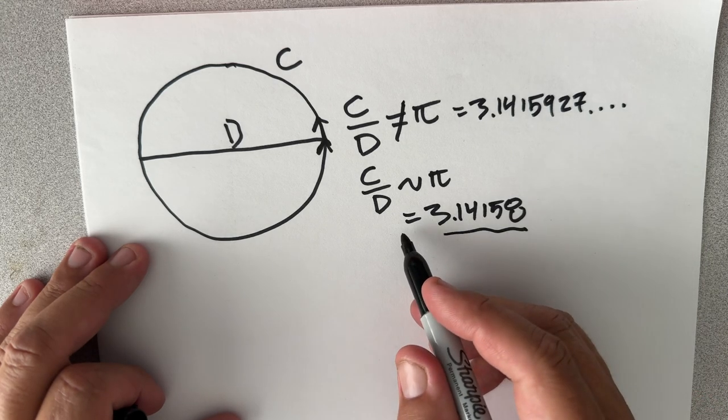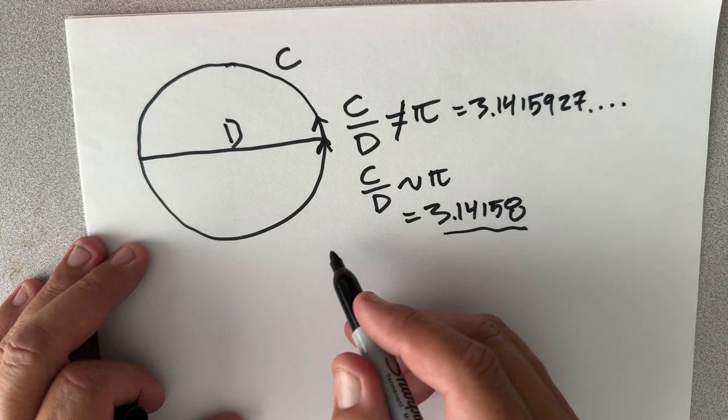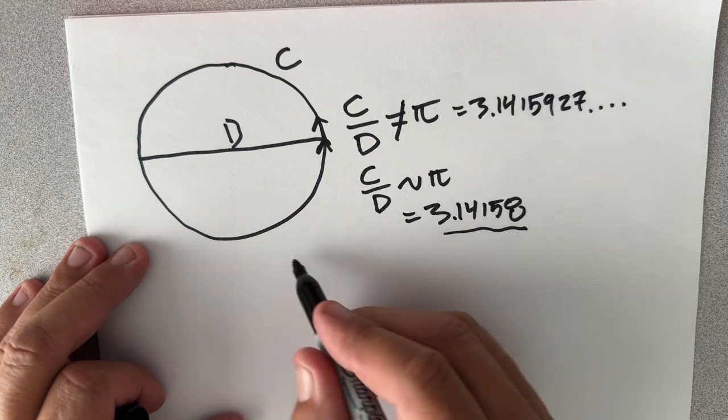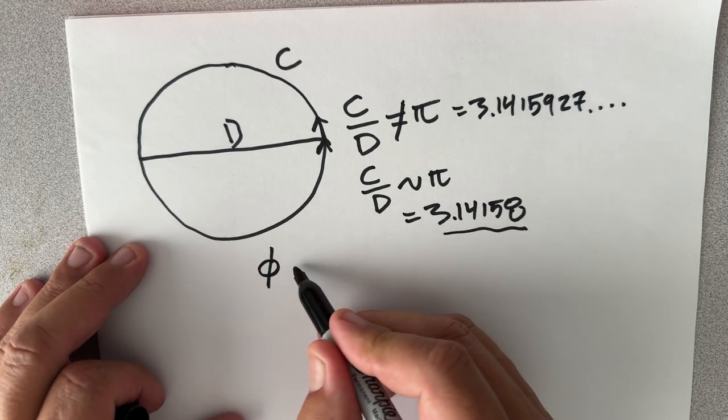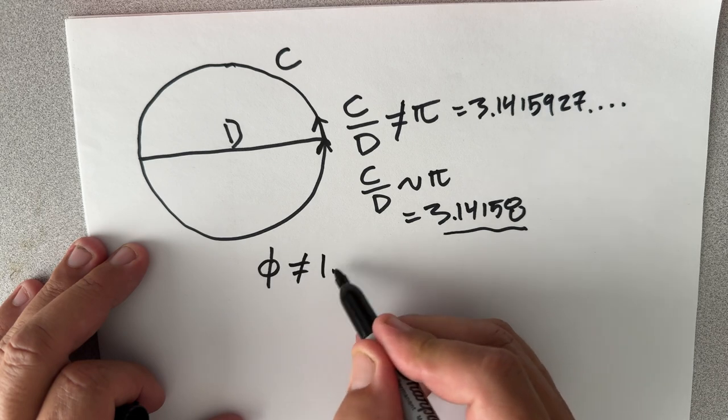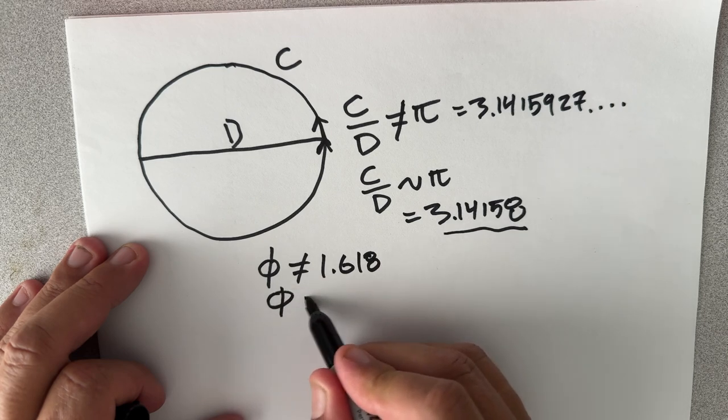Any time you carry out a measurement in real life, you'll never get an irrational number, a number that can never finish being written down. Same thing goes any time someone tells you something is the golden ratio. The golden ratio is not 1.618; it's an irrational number that keeps going.